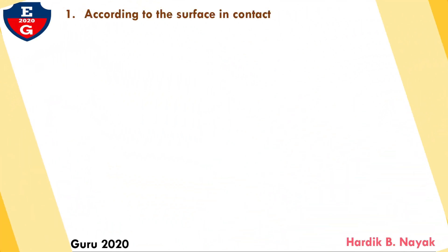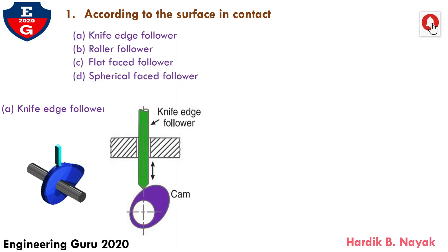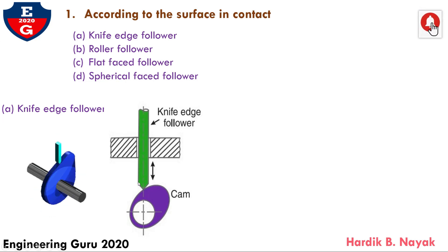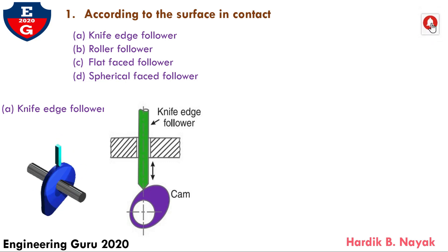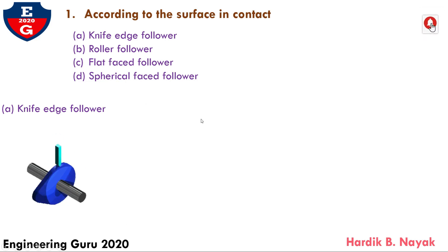We are going to see detail of each type of follower one by one. First, according to the surface in contact. First is knife face follower. When the contacting end of the follower has a sharp knife face — here you can see this is the sharp knife face — the sliding motion takes place between the contact surface, that is the knife face and the cam surface. In knife face follower, a considerable side thrust exists between the follower and the guide.